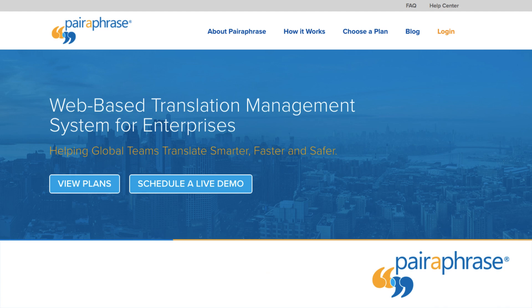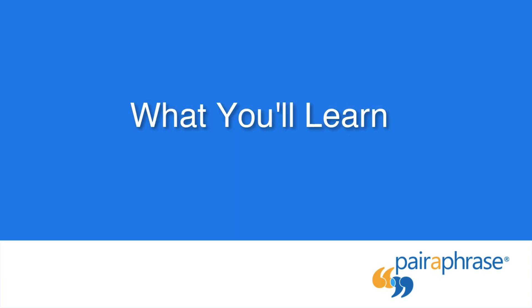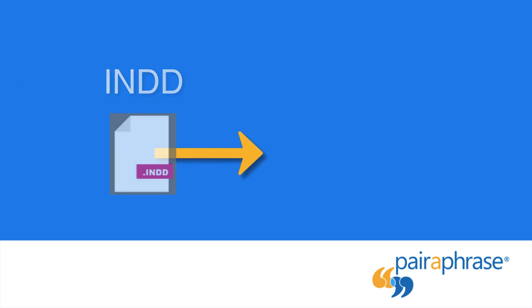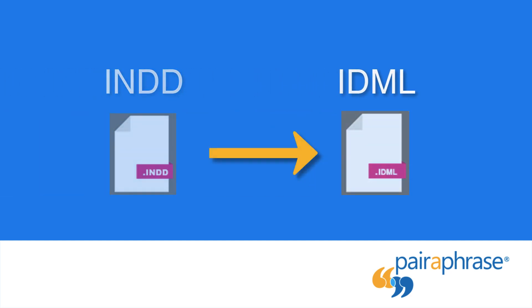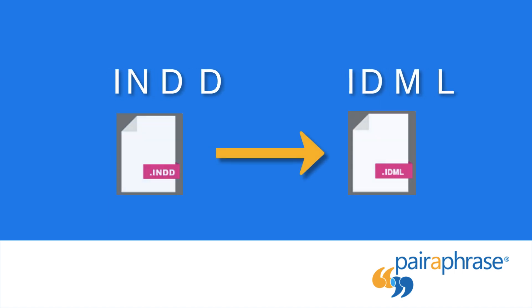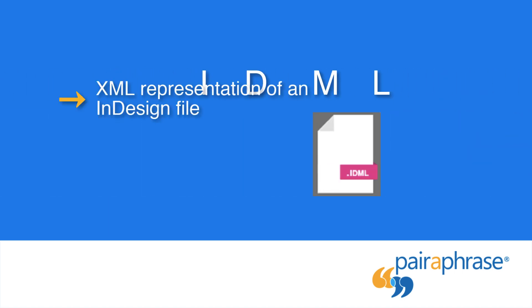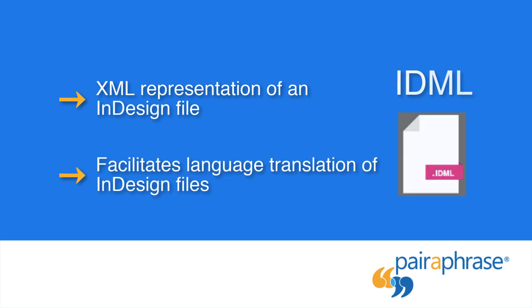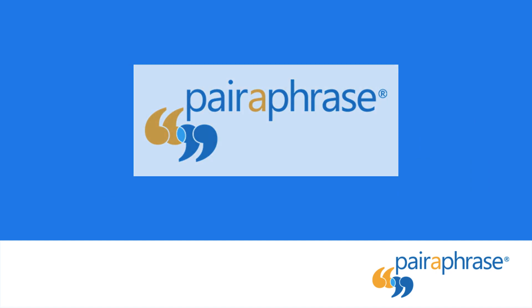Welcome to Paraphrase, a web-based translation management system for enterprises. In this video, you'll learn how to use Adobe InDesign to convert an InDesign document, also known as an INDD file, to an InDesign markup language file, also known as IDML. IDML is the XML representation of an InDesign file, and it was designed to facilitate the translation of InDesign files. It's the InDesign file format compatible with Paraphrase.